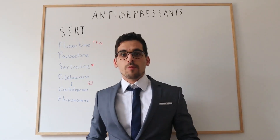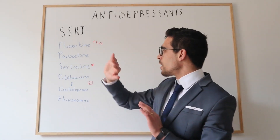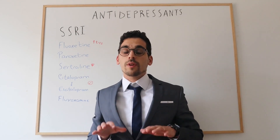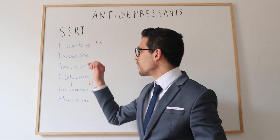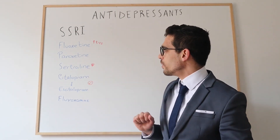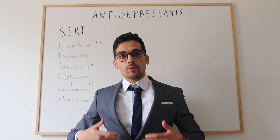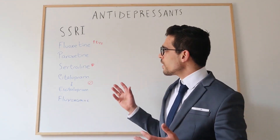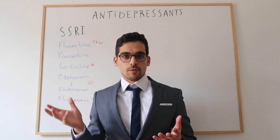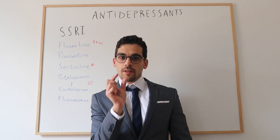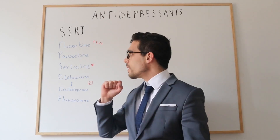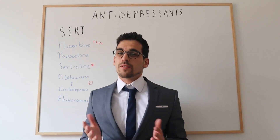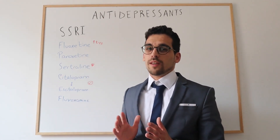Then paroxetine. Paroxetine is almost the opposite — it has a really short half-life period. Because it is absorbed quickly, we will have a higher amount of drug in a shorter amount of time, and because of that it also presents a higher amount of side effects.